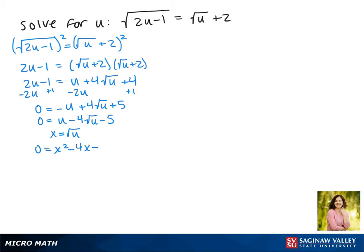So that first term becomes x squared because it's the square root of u squared, and now we can factor this like normal. We get an x minus 5 and an x plus 1, which gives us x equals 5 and x equals negative 1.